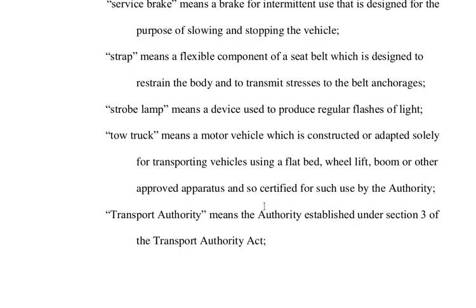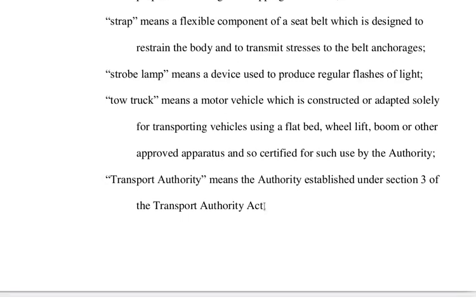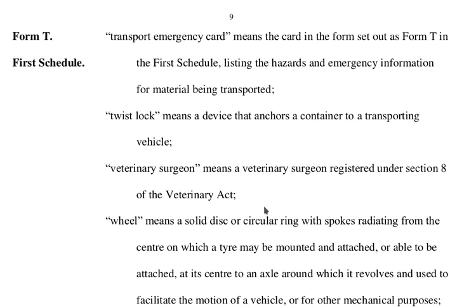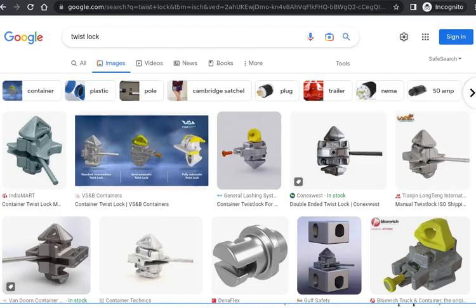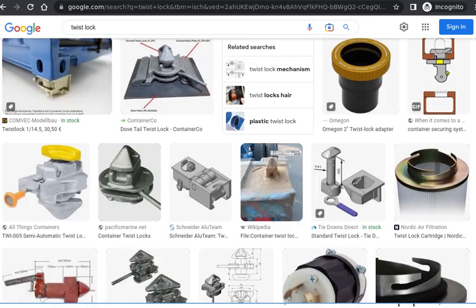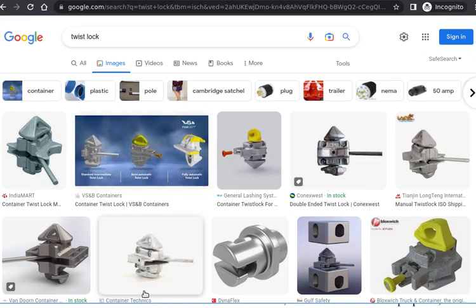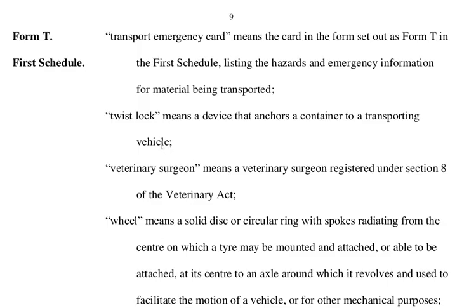Transport authority means the authority established under Section 3 of the Transport Authority Act. Transport emergency card means the card in the form set out as Form T in the first schedule, listing the hazards and emergency information for material being transported. Twist lock means a device that anchors a container to a transporting vehicle — you twist them to lock them in place, which is why they're called twist locks.